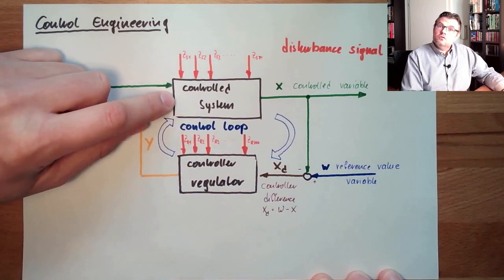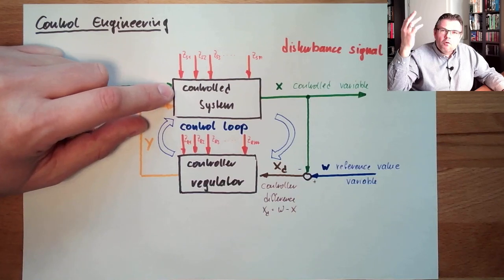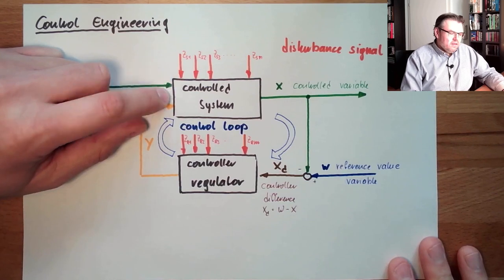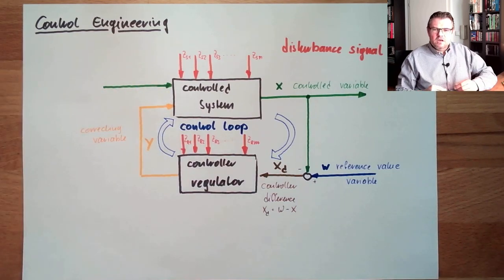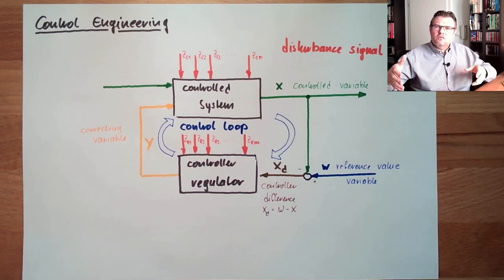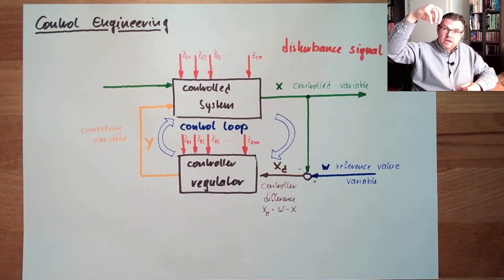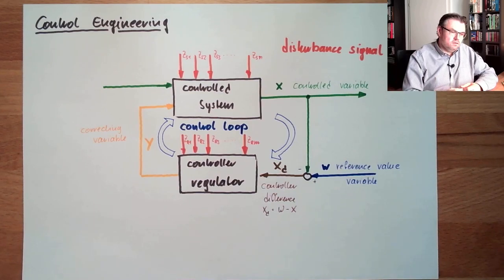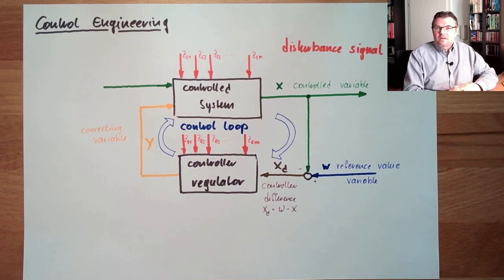There are several different control systems out there. We can distinguish between first order, second order, and third or higher order control systems, which basically reflect the number of energy storage elements inside. Energy storage might be a spring, a mass storing heat energy, the location of a weight — potential energy — spring tension, also potential energy, or a rotating mass storing kinetic energy. The number of those energy storage items inside the system determines the order, as we discussed in measurement.